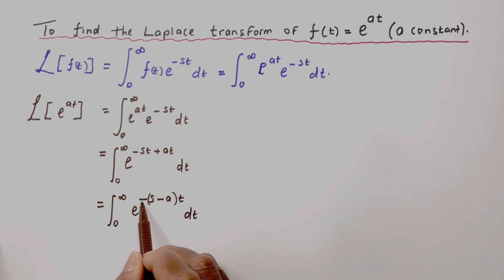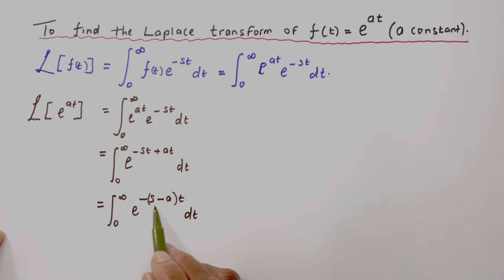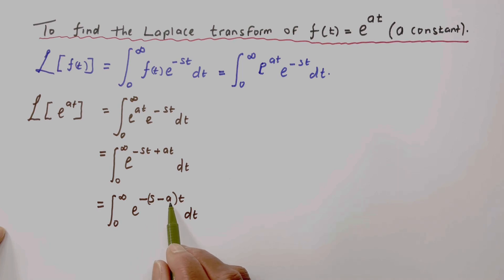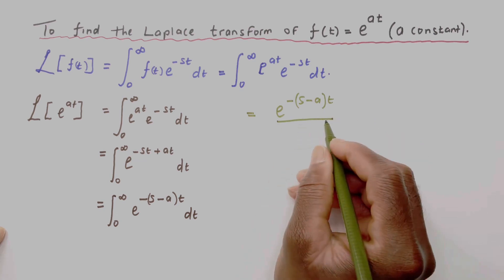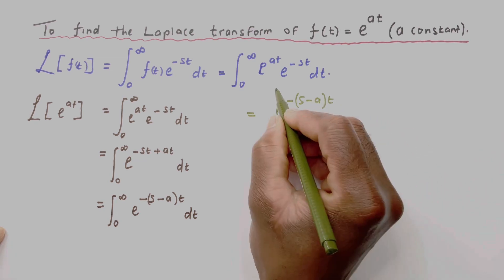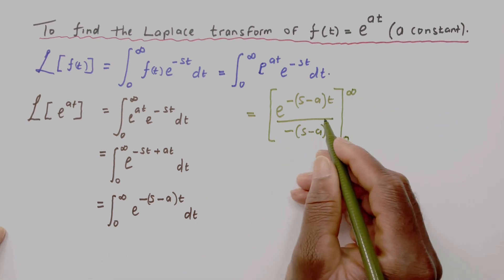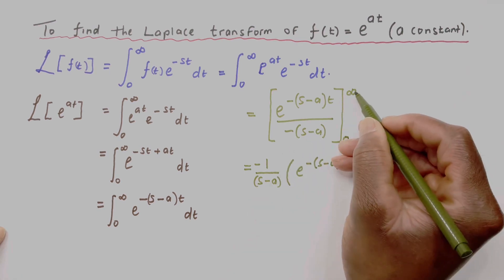Taking the common factor minus t out, when we integrate an exponential function we get the exponential function back, divided by the derivative of the exponent. The derivative of the exponent is minus (s minus a), so we get the exponential function divided by minus (s minus a), evaluated from zero to infinity. The denominator is a constant so we bring it out front.